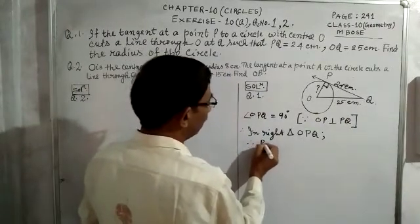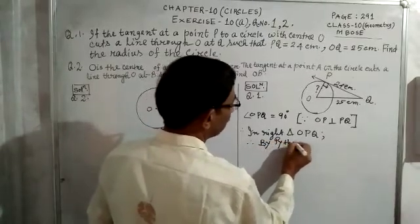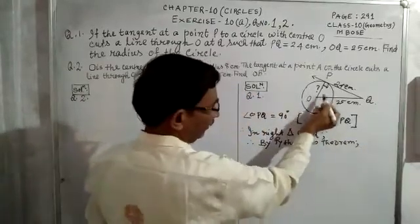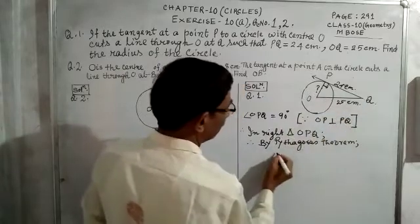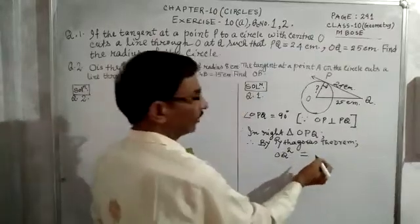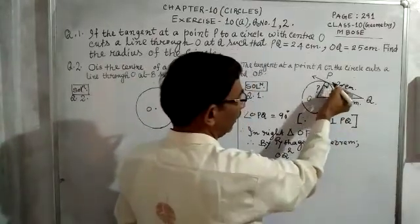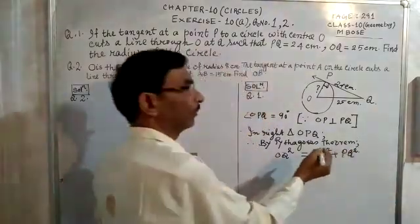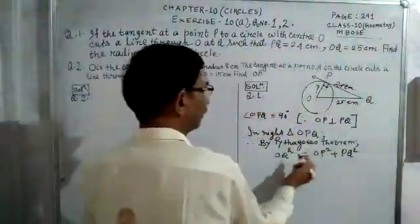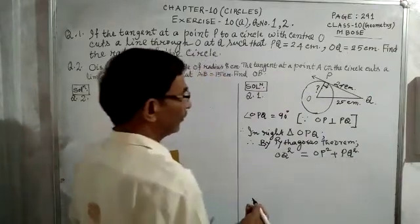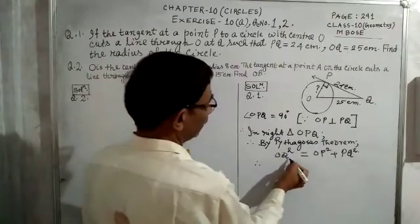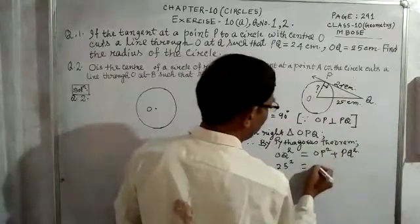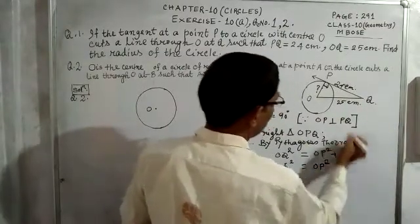By Pythagoras theorem: square of hypotenuse equals sum of squares of the other two sides. So OQ² = OP² + PQ². The value of OQ (hypotenuse) is 25, so 25² = OP² + 24².